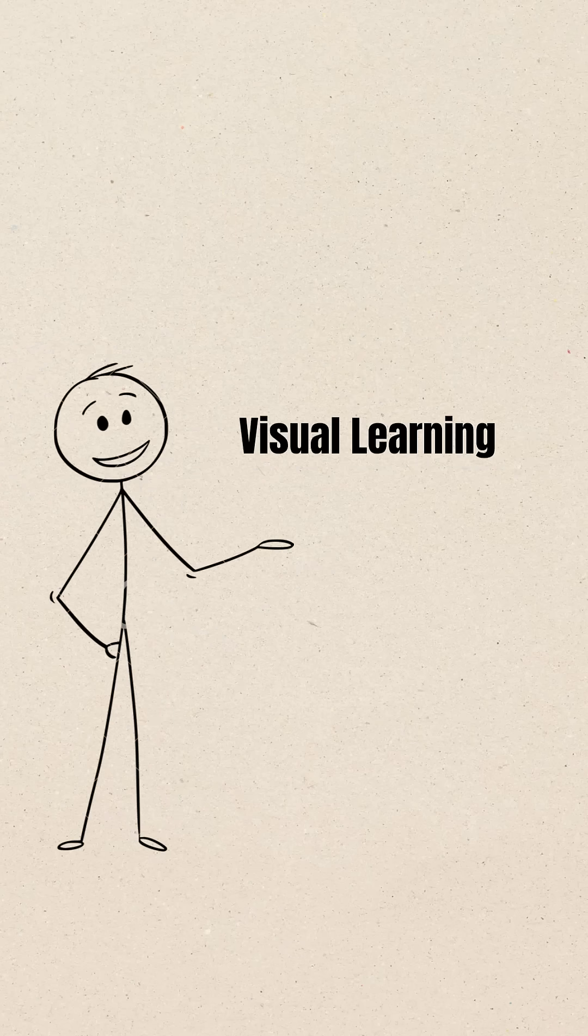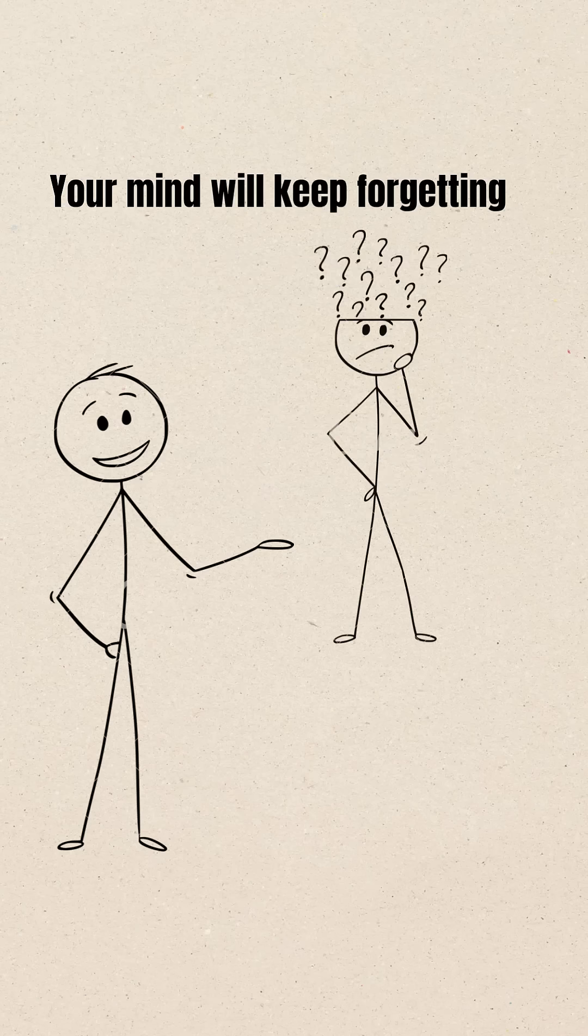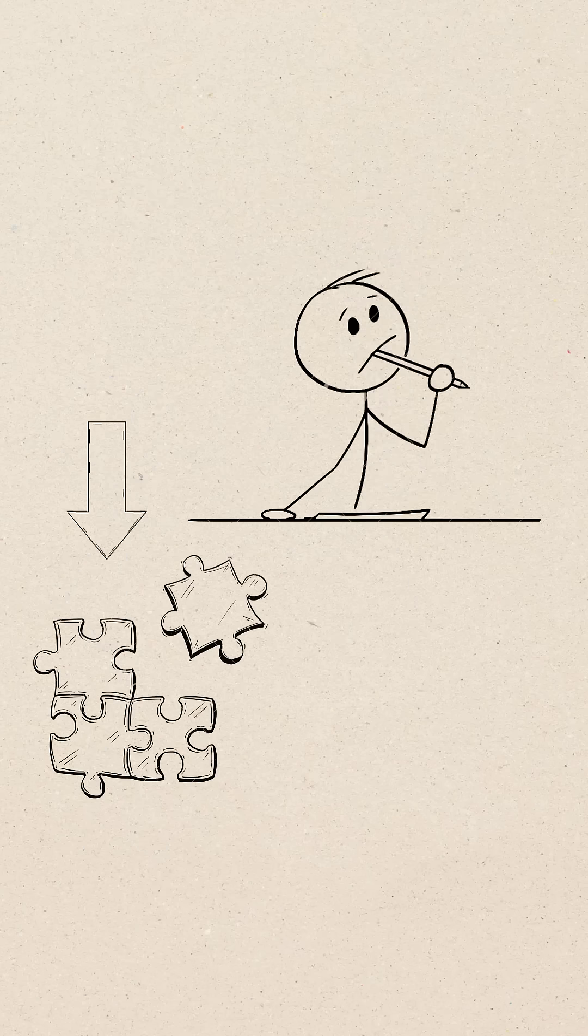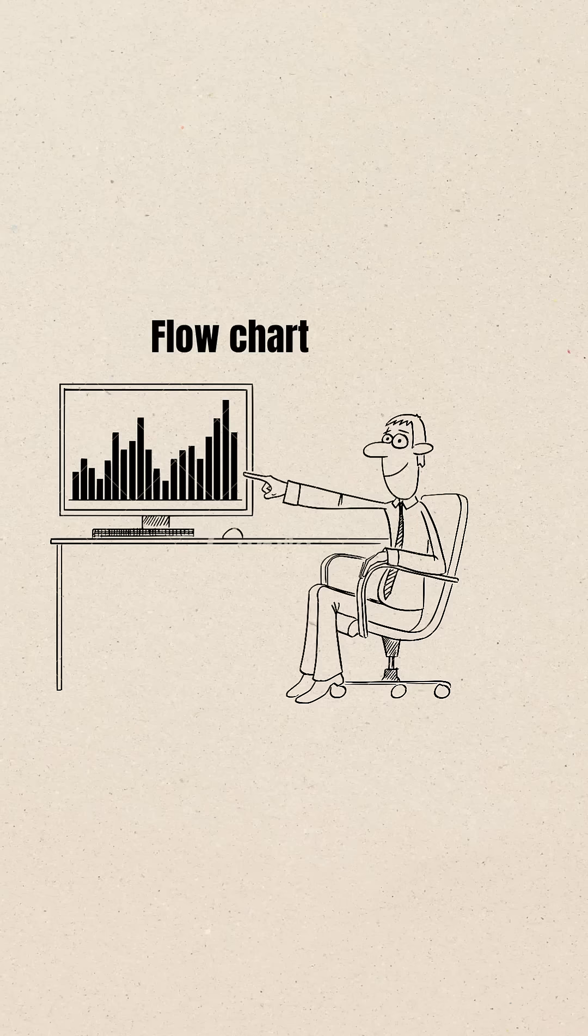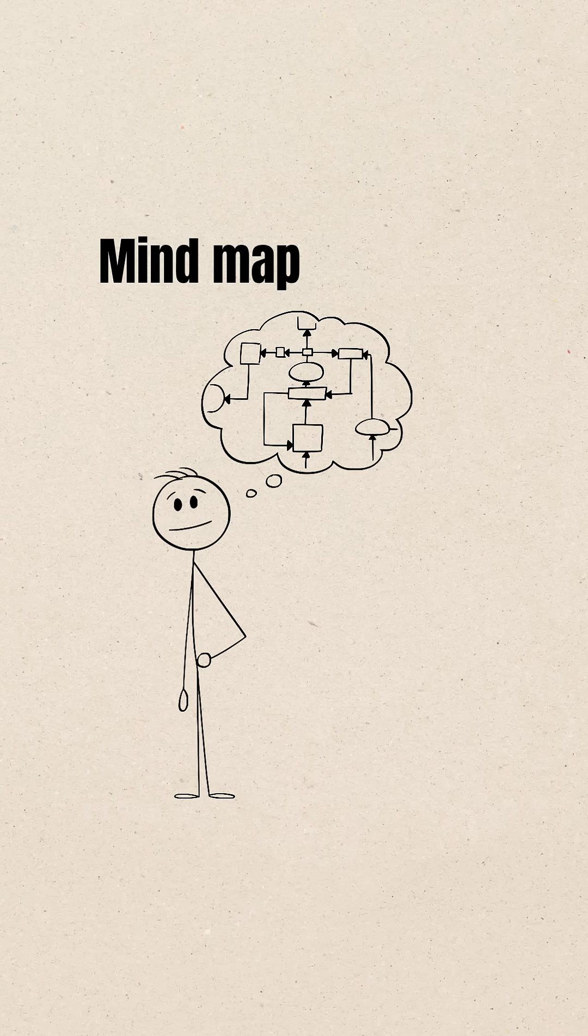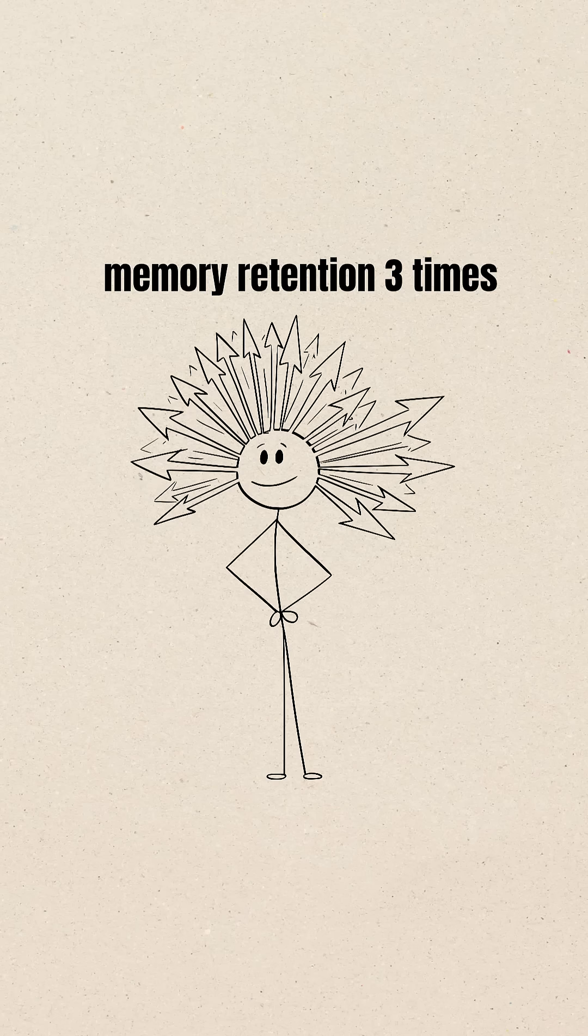Trick number one: Visual learning. If you keep reading the same boring notes, your mind will keep forgetting. Instead, break down tough topics into color-coded diagrams, flowcharts, or mind maps. Visuals boost your memory retention three times faster than plain text.